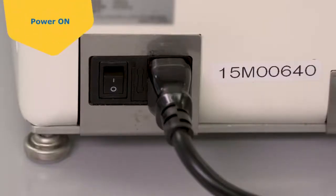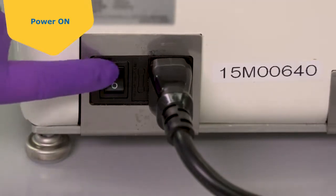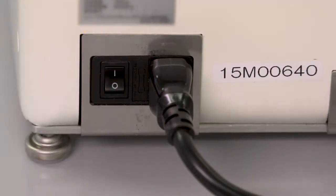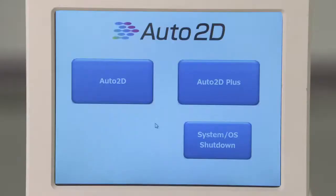Turn on the Auto2D device. The power switch is located on the back of the device. The screen will turn on and display two modes of operation.